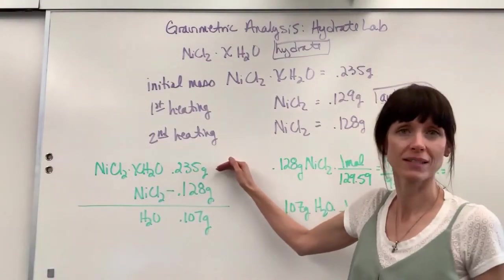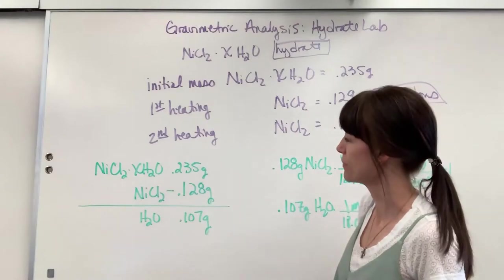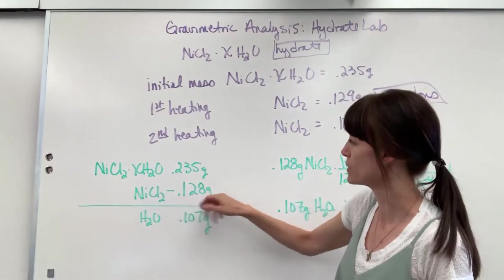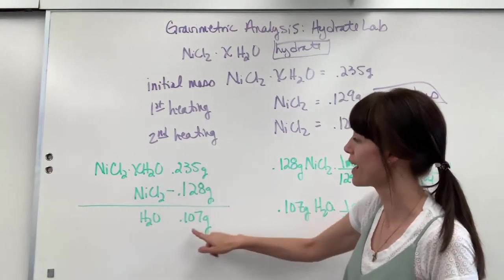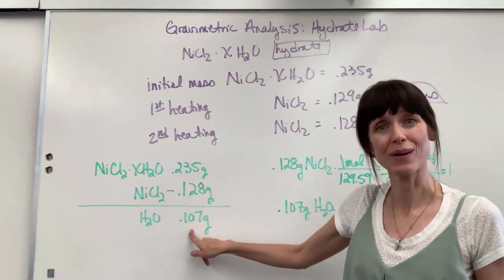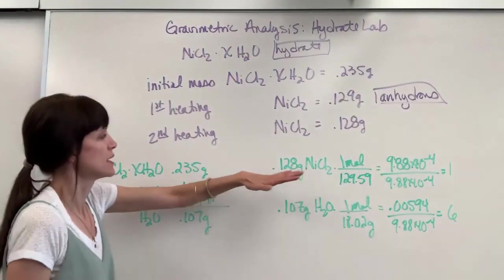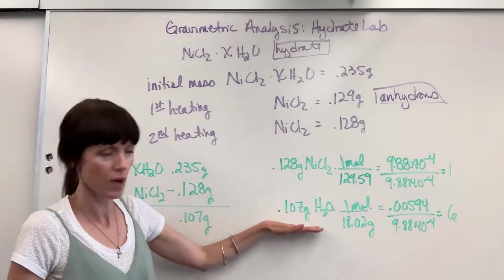Here is the initial mass of the hydrate, 0.235. The mass of my anhydrous substance, that salt, is 0.128. If you subtract that, that's the amount of water that was driven off. So now I can take those two numbers. Here's the mass of the salt, the mass of the water. Remember ionic compounds, we call those salts.